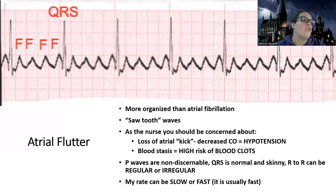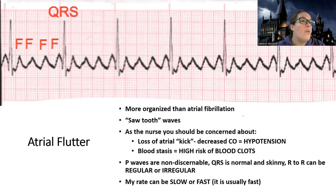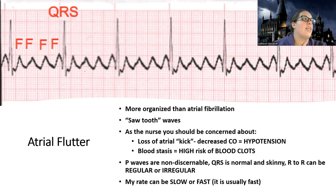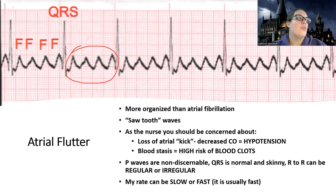Now let's talk about atrial flutter. The same thing that's happening in AFib is happening in flutter — the top of the heart is not doing a good contraction. The only thing that's different is the way the P waves are showing up. For flutter versus AFib, you're going to notice what are called sawtooth waves. A lot of times people say these look like shark teeth. You may look at this and think, 'Oh, these are a bunch of P waves' — but you're only supposed to have one. There are just too many waves.